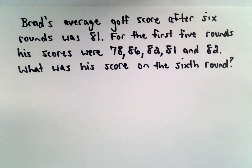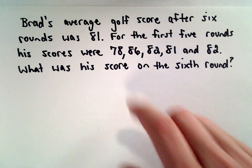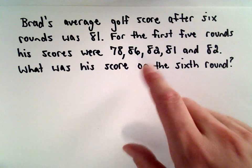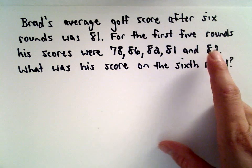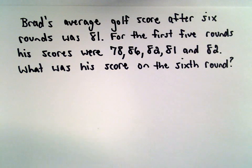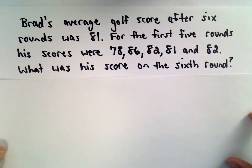Brad's average golf score after six rounds was 81. For the first five rounds, his scores were 78, 86, 82, 81, and 82. We want to know what was his score on the sixth round.